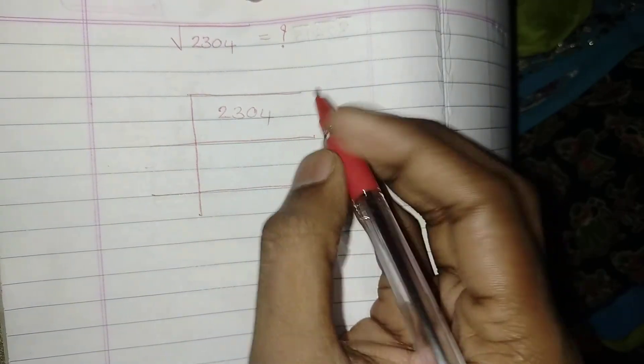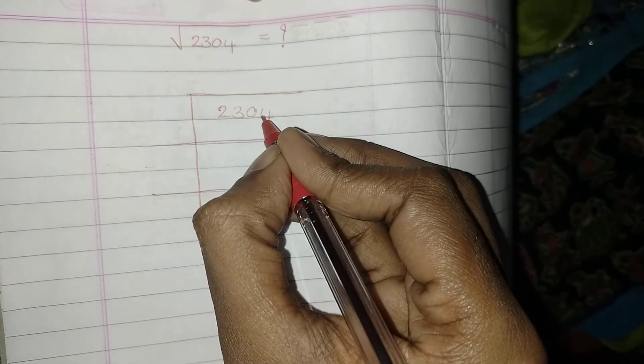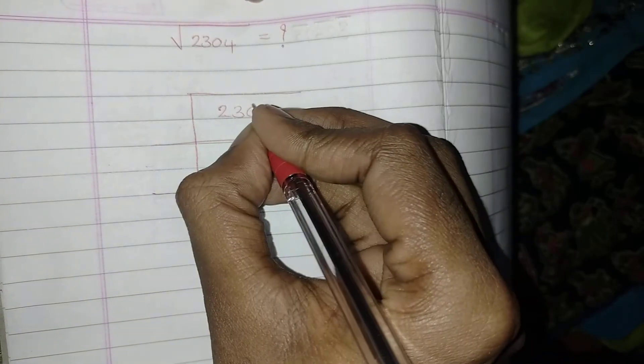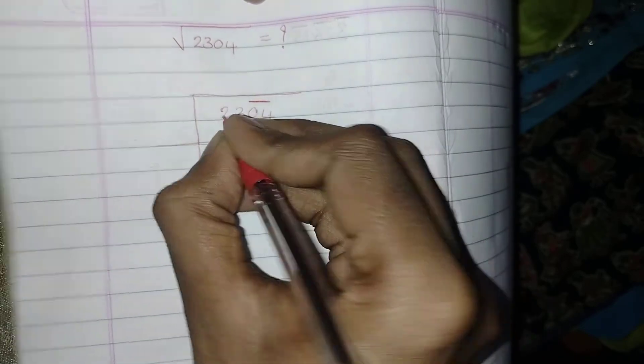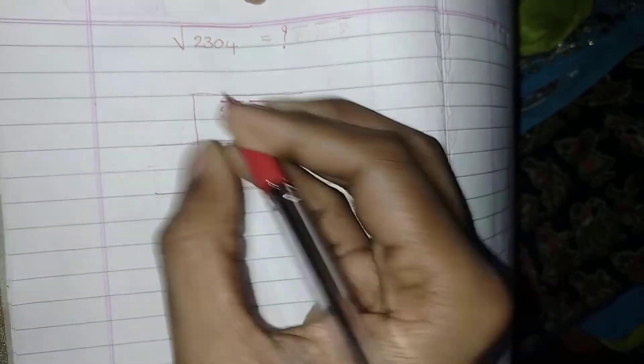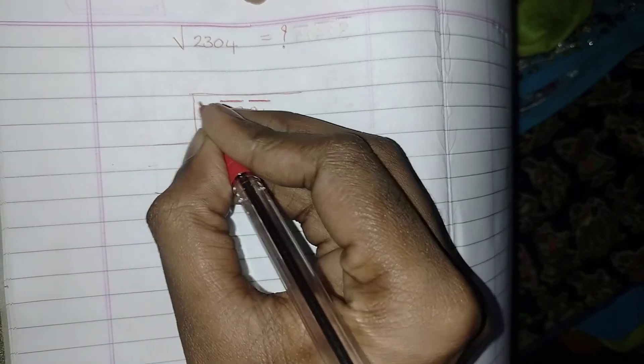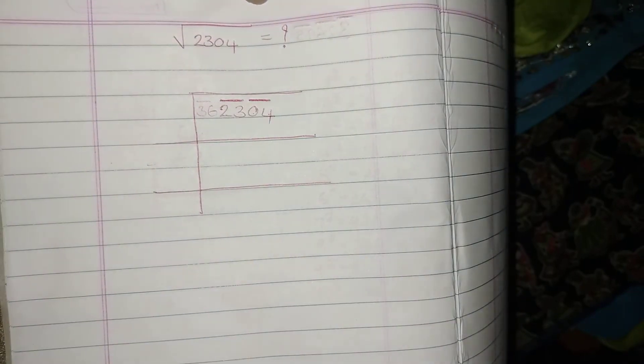And a group should contain two digits, starting from the last we need to make a group. One, two, this will be one group. Next one, two, this will be another group. If suppose if there was a 63, then that will be another group. It goes on to two groups you have to make.